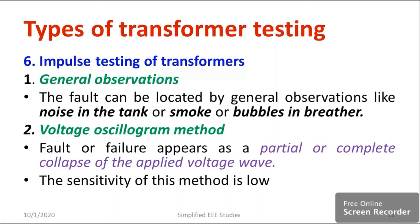Let us understand the peculiarity of general observation. Suppose you are observing the transformer tank where you store transformer oil. If you find any bubble-like structure or any noises in the transformer tank, there is definitely a problem with the transformer insulation. If you found any abnormality — some kind of bubbles, noises, smoke, or other disturbances — we say there is a problem in the transformer oil.